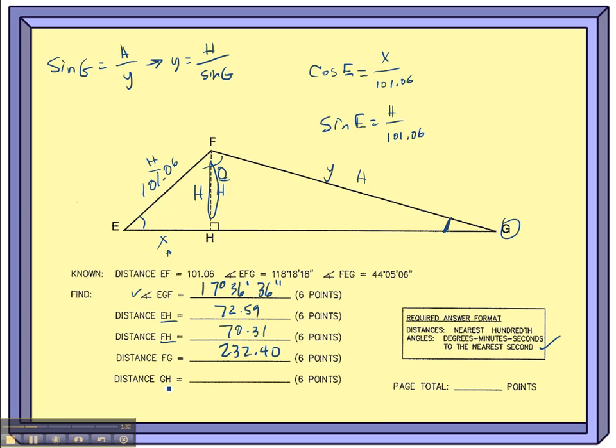All right, last one I need to find is GH. GH is the last segment in this right-hand right triangle. Let's call it Z. Okay, I have still the opposite side with the H stored in my calculator. The Z here is the adjacent side.